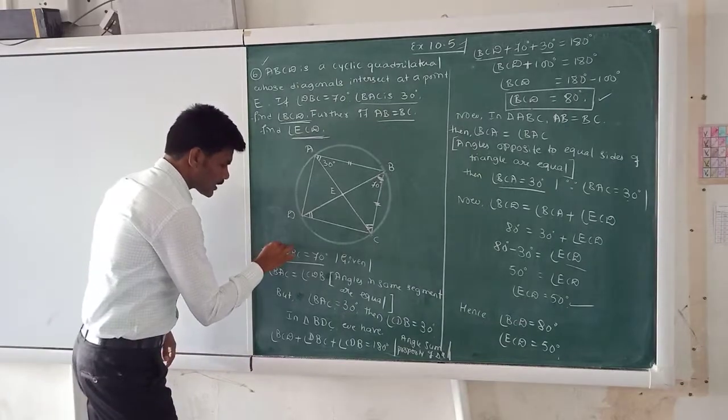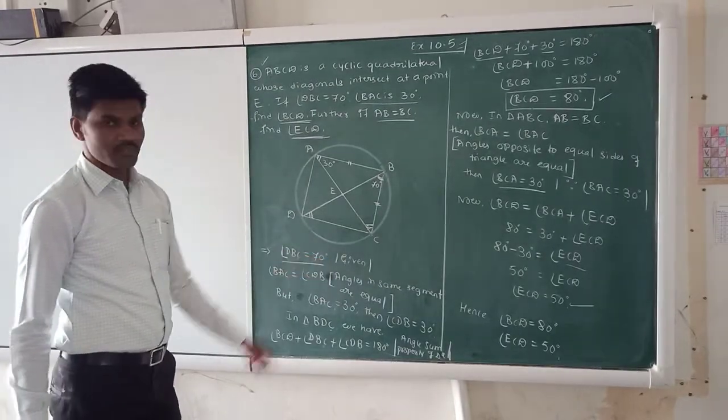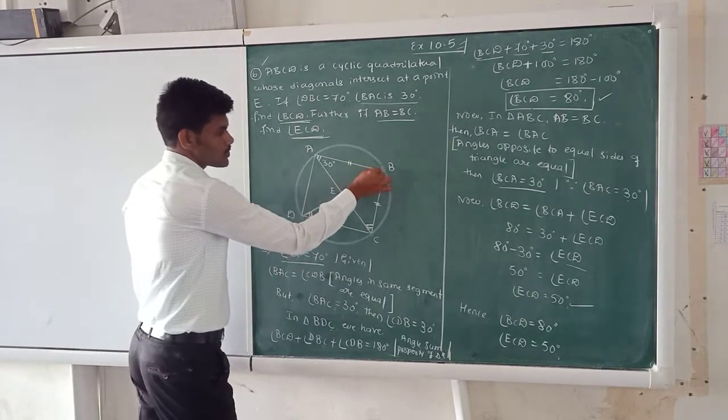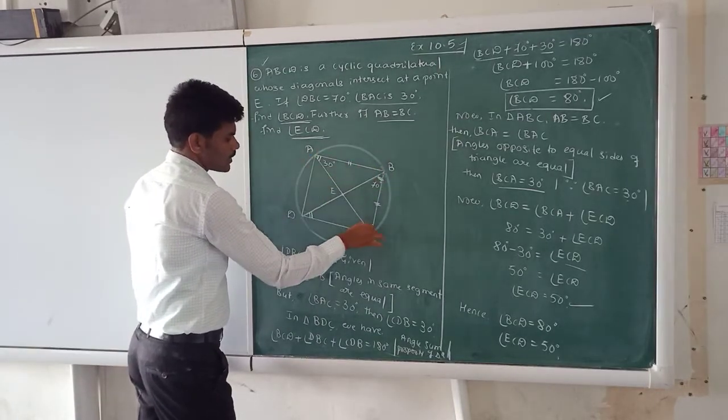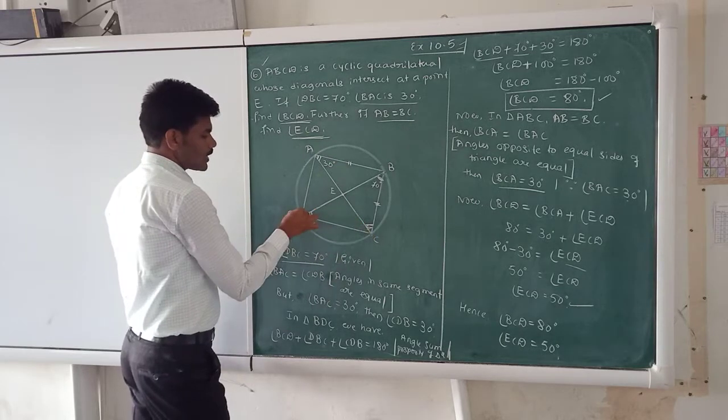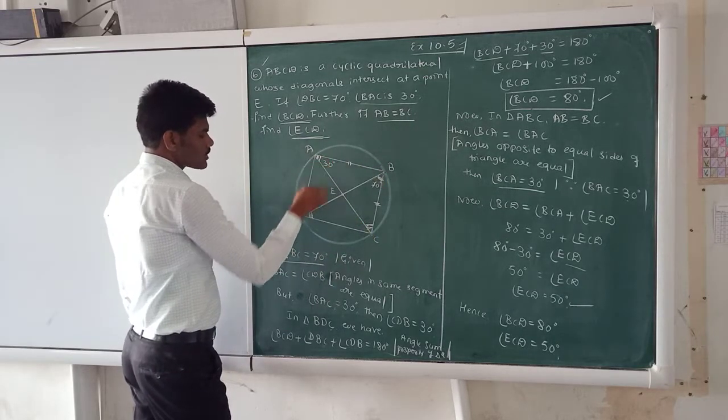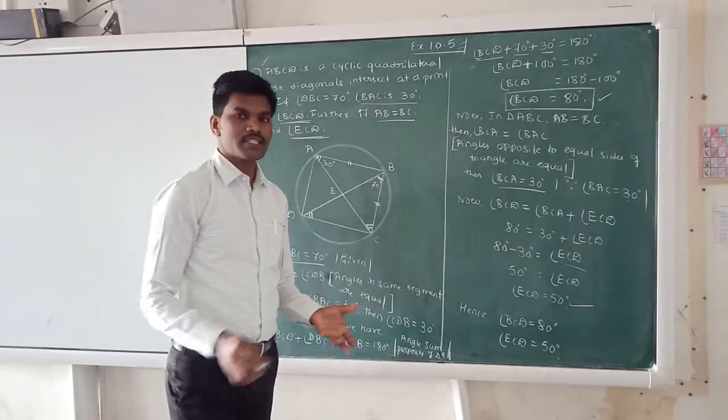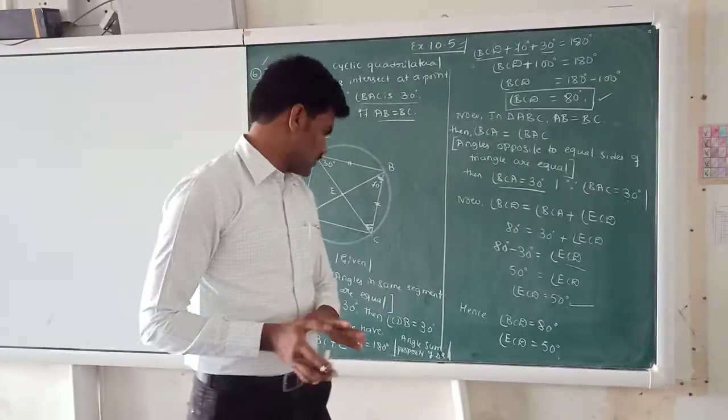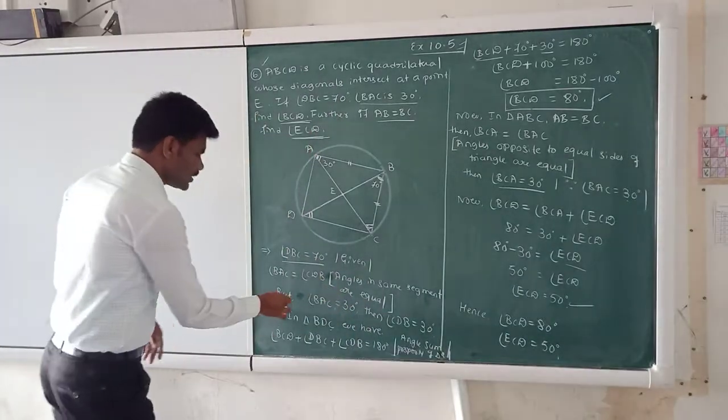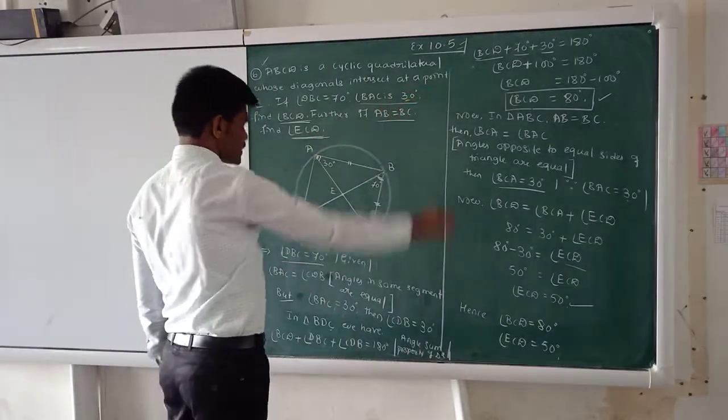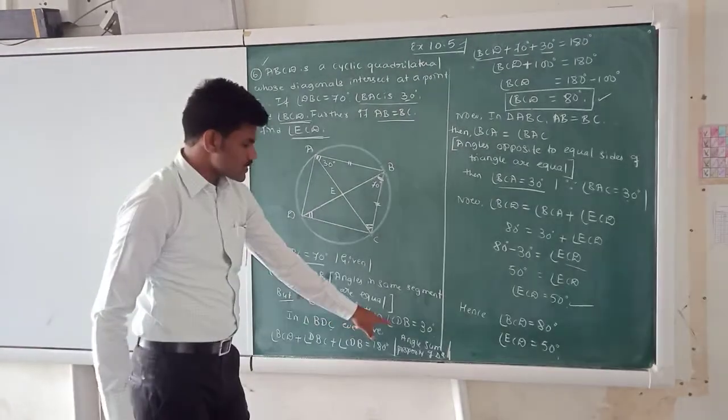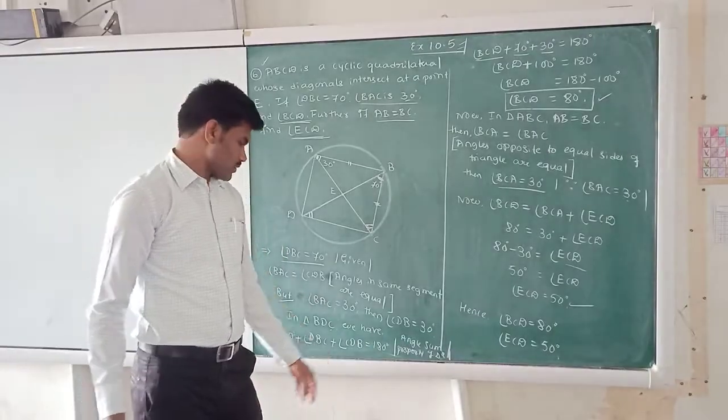See, the argument that angle DBC is equal to 70 degrees, it is given. Next, what of one? The angle BAC. Understand that question? Angle BAC is equal to angle CDB because these two angles are in the same segment. So, we know that angles in the same segment are equal. So, that is my what of one. But, you know that angle BAC is 30 degrees. If angle BAC is 30, then what of one? The angle CDB is also 30 degrees.